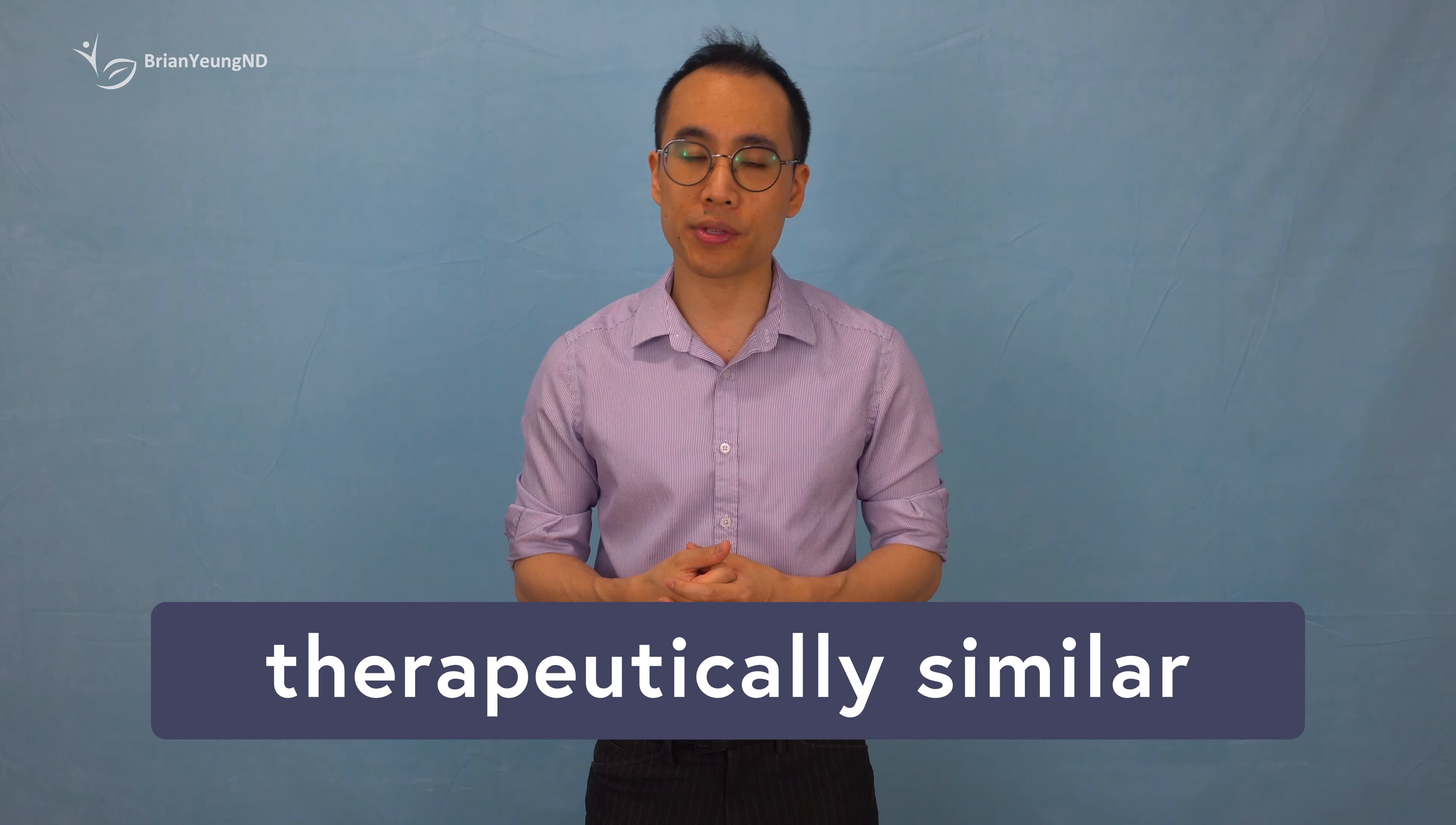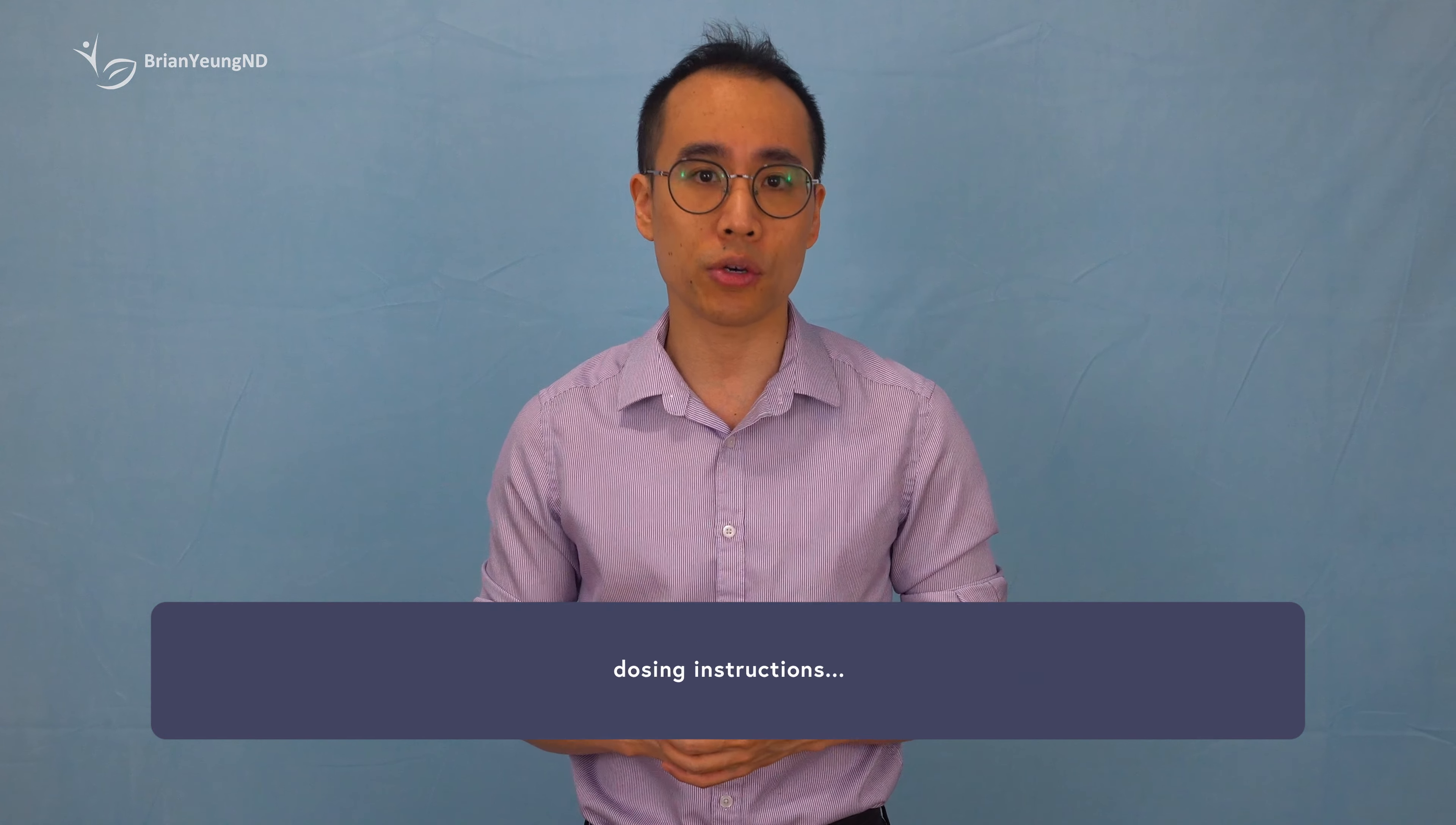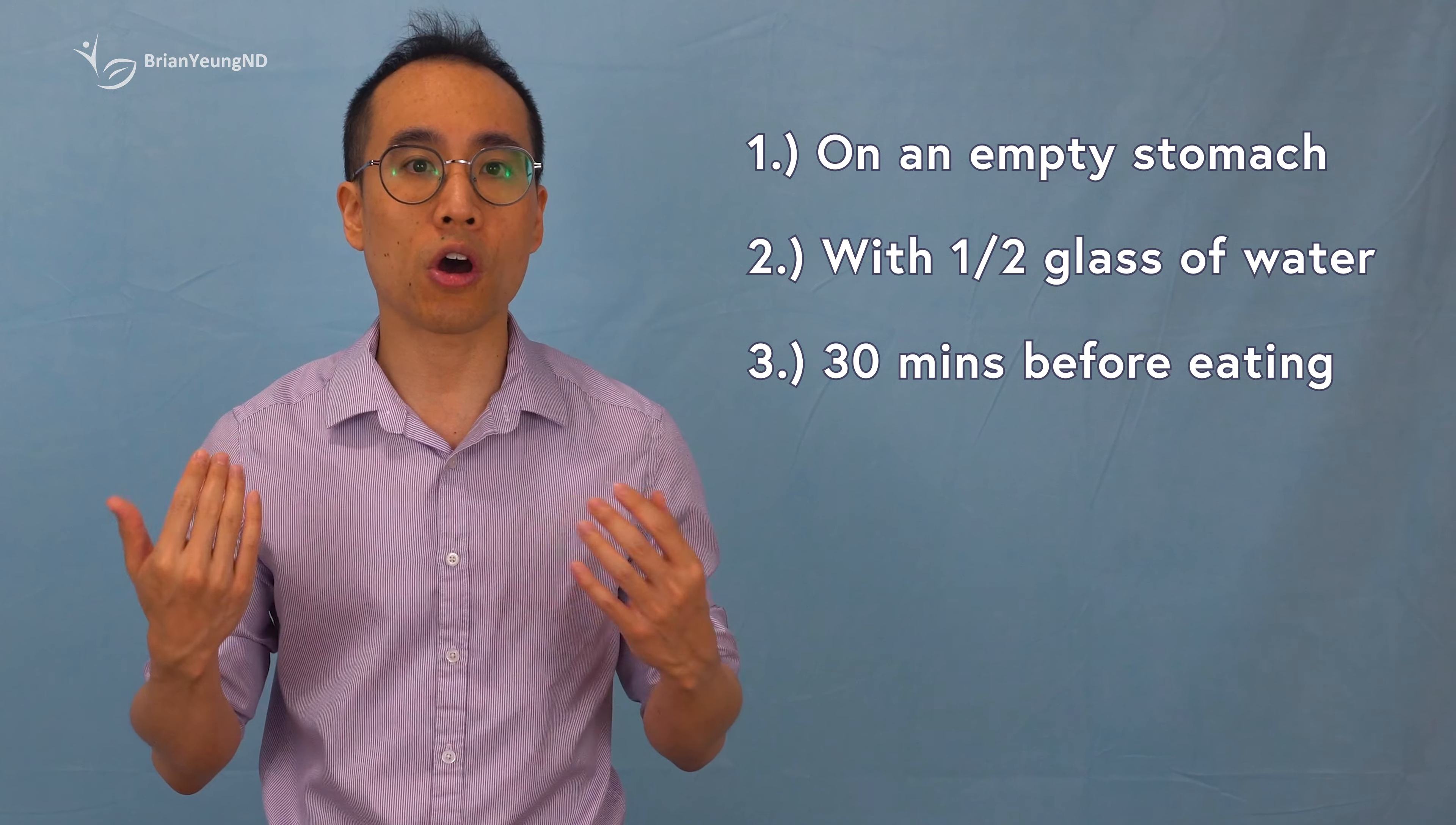Many clinicians consider Ozempic and Rybelsus therapeutically similar. However, people often find oral semaglutide like Rybelsus less effective because they don't strictly follow the dosing instructions. The strict requirements for taking Rybelsus on an empty stomach with limited water and waiting before eating mean it can be much less effective if these instructions aren't followed precisely.